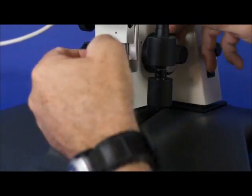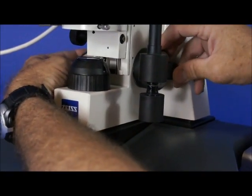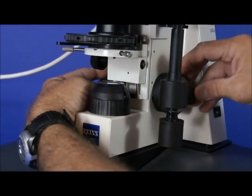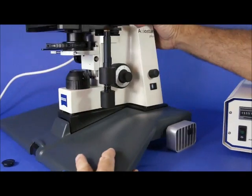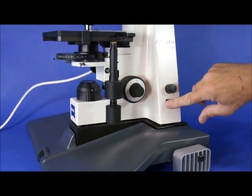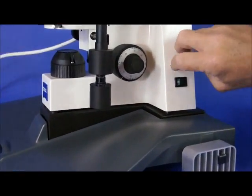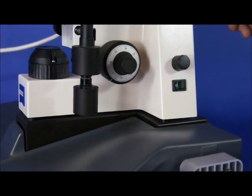This microscope is also equipped with coaxial coarse and fine focus on both sides of the stand. Moving over to the side you can see that it's equipped with the on and off switch, a rheostat for increasing the intensity or decreasing the intensity.